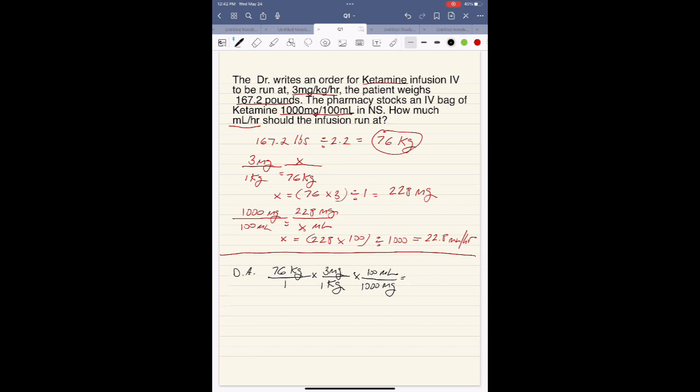Now we multiply 76 times 3 times 100. Work it out in your calculator. The answer is 22,800 over 1,000, which equals 22.8 milliliters per hour.